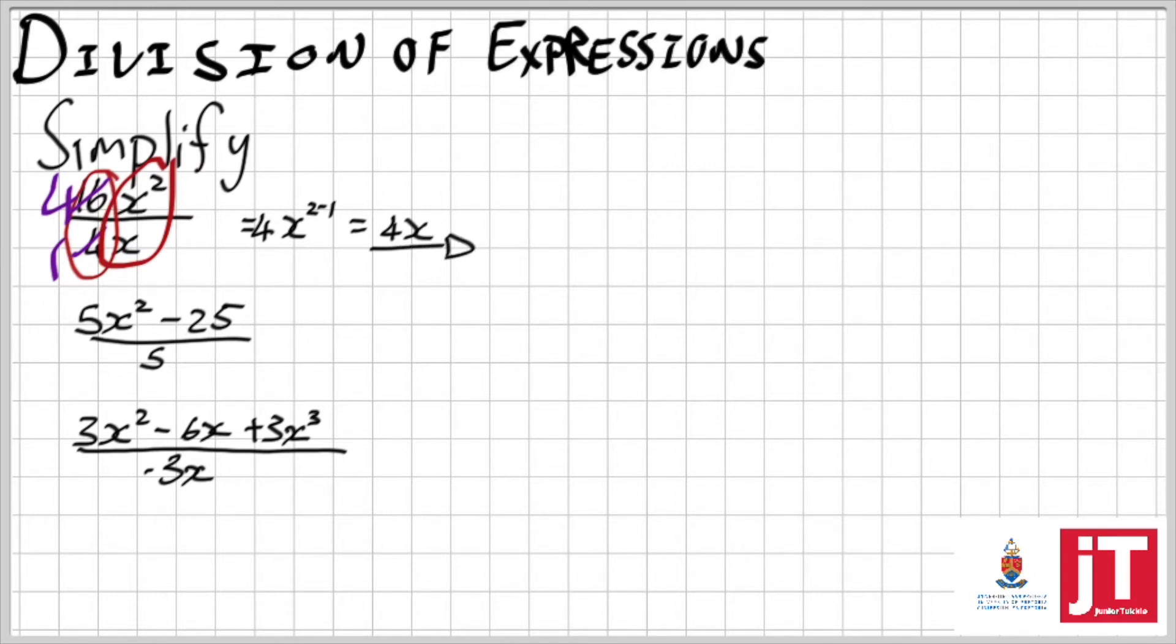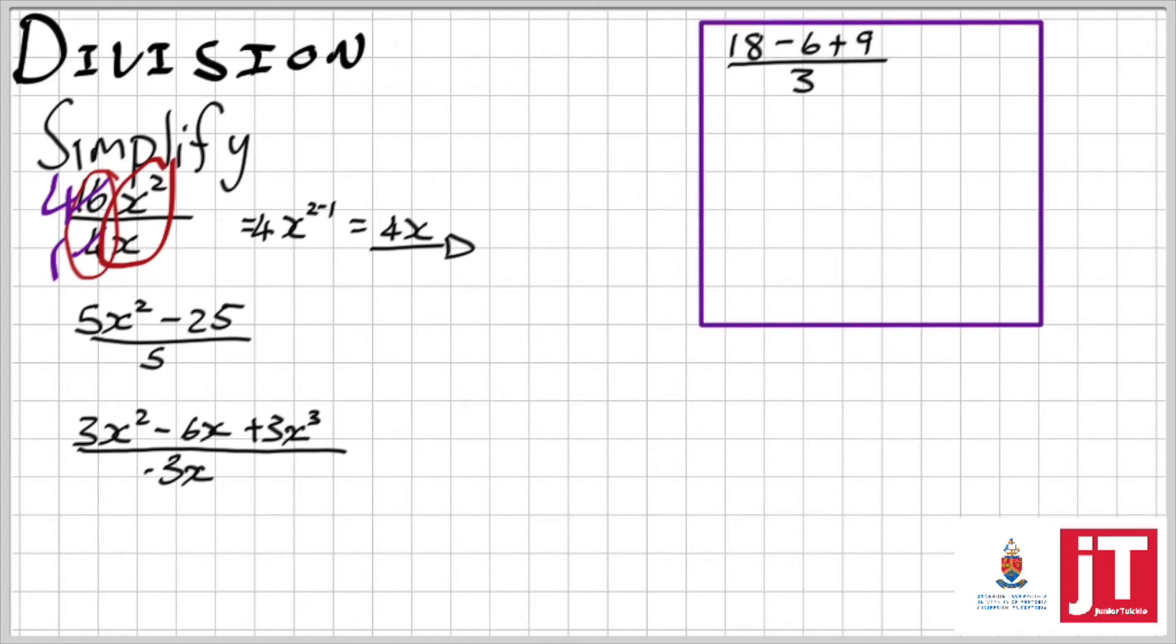Before I can get to the second one, ladies and gentlemen, we must first remember that there's some awesome stuff we can do with fractions. If I look at 18 minus 6 plus 9 over 3, the first logical thing you could do is say I can add the top and just divide it by 3, and the answer is 7.